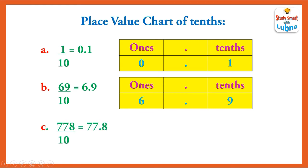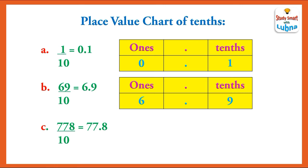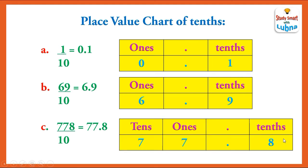The third example: 778 divided by 10, which is equal to 77.8. Here the place value of the first 7 is ones, the second 7 is tens, and 8 is tenths.